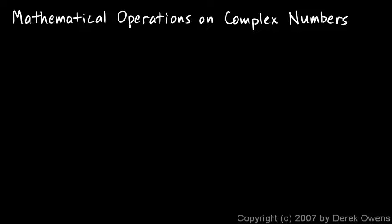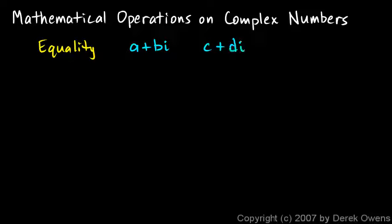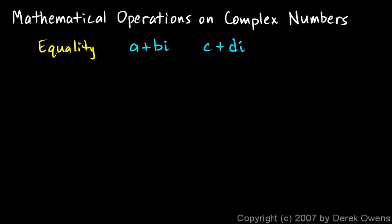The first thing we'll discuss is the concept of equality, which is really trivial but we need to cover it for completeness. If we have two complex numbers in standard form — a plus bi and c plus di — each has a real part and an imaginary part. These two numbers are equal only if the real parts are equal to each other and the imaginary parts are equal to each other. In other words, a must equal c and b must equal d.